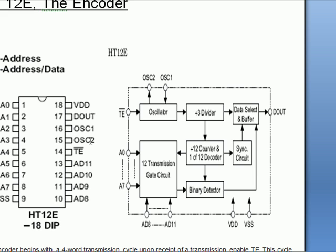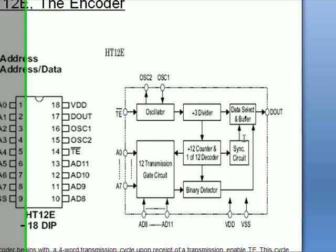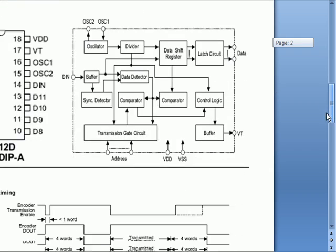That will determine the frequency. The internal oscillator frequency of the decoder is 50 times the oscillator frequency of the encoder. This is the encoder IC and this is the decoder IC.